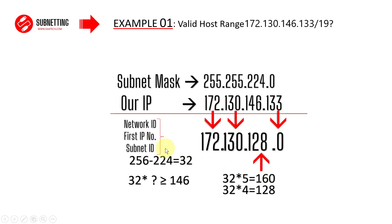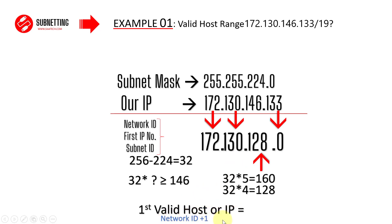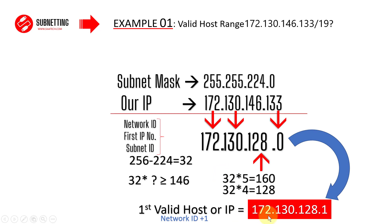So the Network ID or first IP in the network will be 172.130.128.0. This is not a valid IP. As mentioned, the first valid IP will be Network ID plus one, so the first valid host in the network will be 172.130.128.1. This is the first valid IP in the network. Since the question asks for the host range, we also need to find the last valid IP.